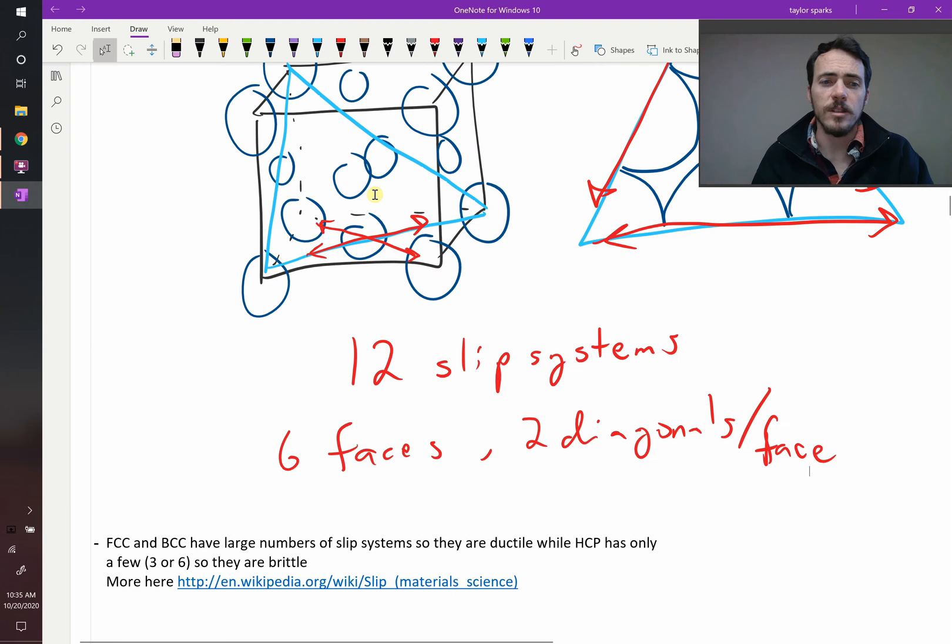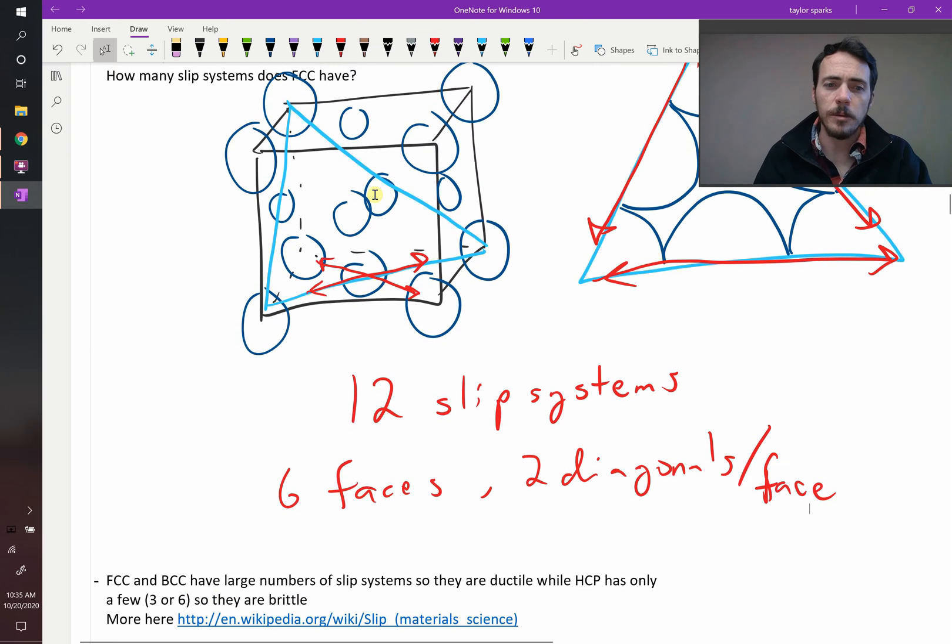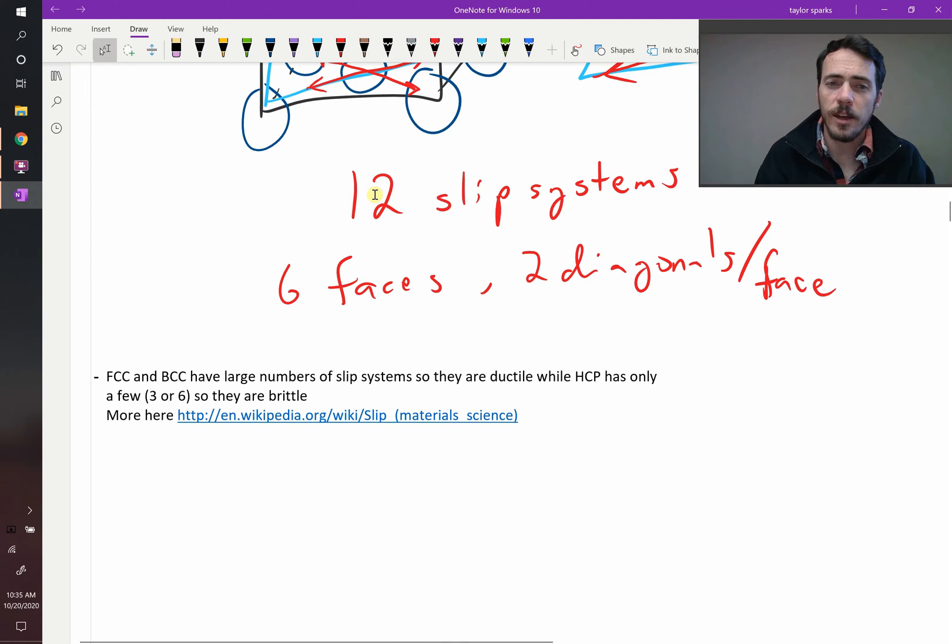You could do the same thing with BCC. You could count how many BCC has or HCP. And what you'll find is that BCC and HCP and FCC have different numbers of slip systems. In fact, HCP only has three or six.